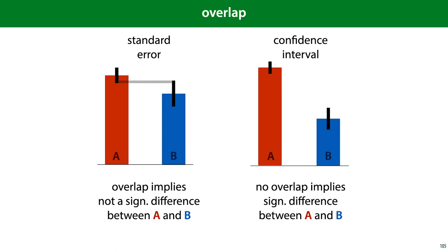In the case of a confidence interval, the logic runs the other way around. If we see no overlap, then we may conclude that there is a statistically significant difference between A and B. Note that in both cases, the reverse doesn't hold.